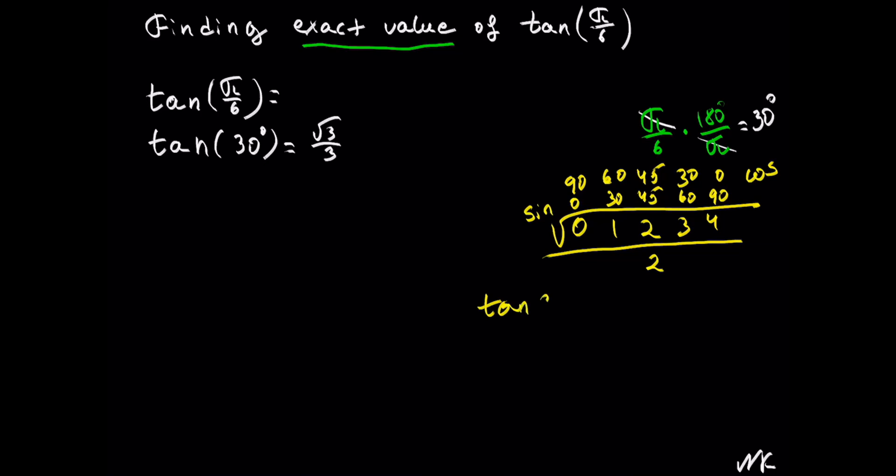Tan(30°) equals sin(30°) divided by cos(30°). The reference for sin(30°) is on top of 1, so we get √1/2 or just 1/2, divided by cos(30°).